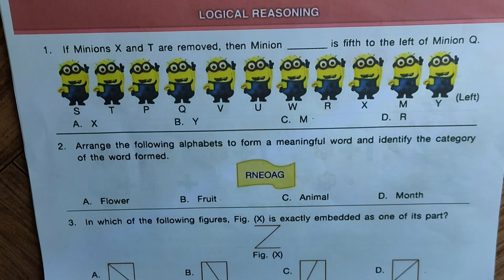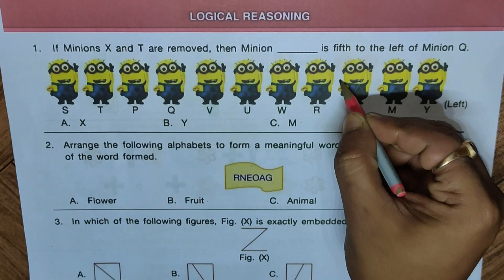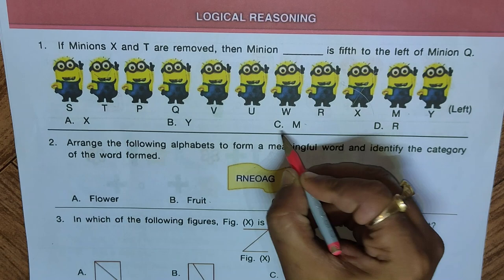Question one from the logical reasoning part: if minions X and T are removed, then minion dash is fifth to the left of minion Q. We cross out X and T, then count fifth from the left of minion Q — we reach M. Among the options, option C has M, hence we mark C as the right answer.